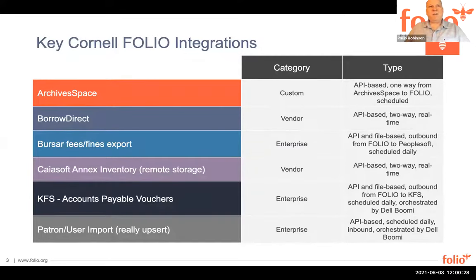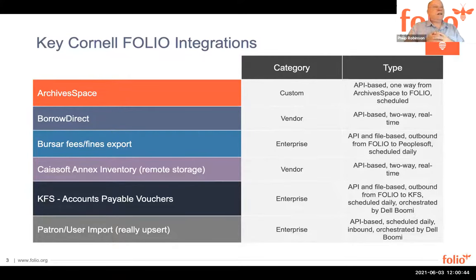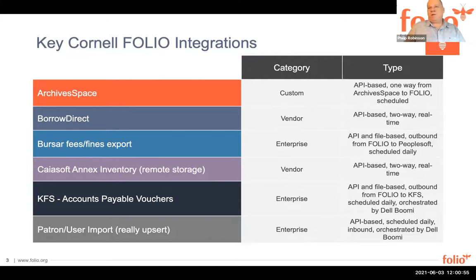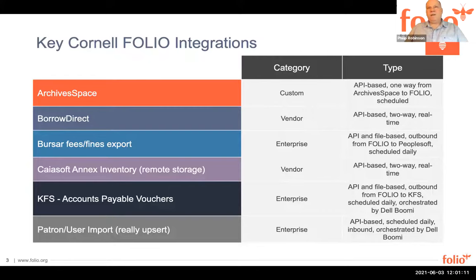Starting at the top of our key integrations: ArchivesSpace is used in our archives area for special collections — basically a one-way update of ArchivesSpace data to Folio, scheduled to pick up deltas since there's a lot of data in our ArchivesSpace instance. BorrowDirect involves several universities that have an ILL-type interaction just for themselves, and it's API-based with real-time integration. Bursar fees and fines exports — this is what's called a transfer in Folio parlance — is an export of fees and fines ready to be transferred to our Bursar area at Cornell.